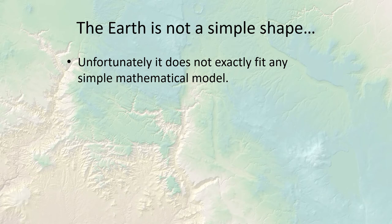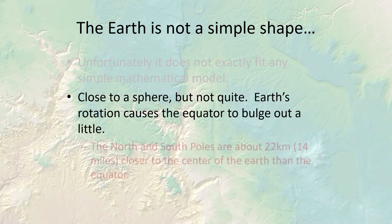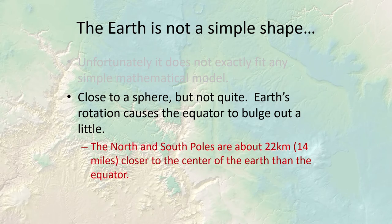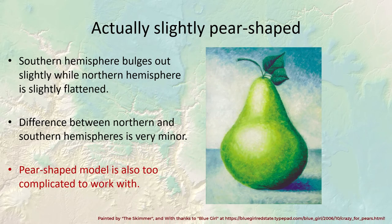The problem is that the earth is not a simple shape — it does not fit any simple mathematical model. It's almost a sphere but not quite. The earth's rotation makes it bulge out at the equator, and the north and south poles are about 22 kilometers closer to the center of the earth than the equator.